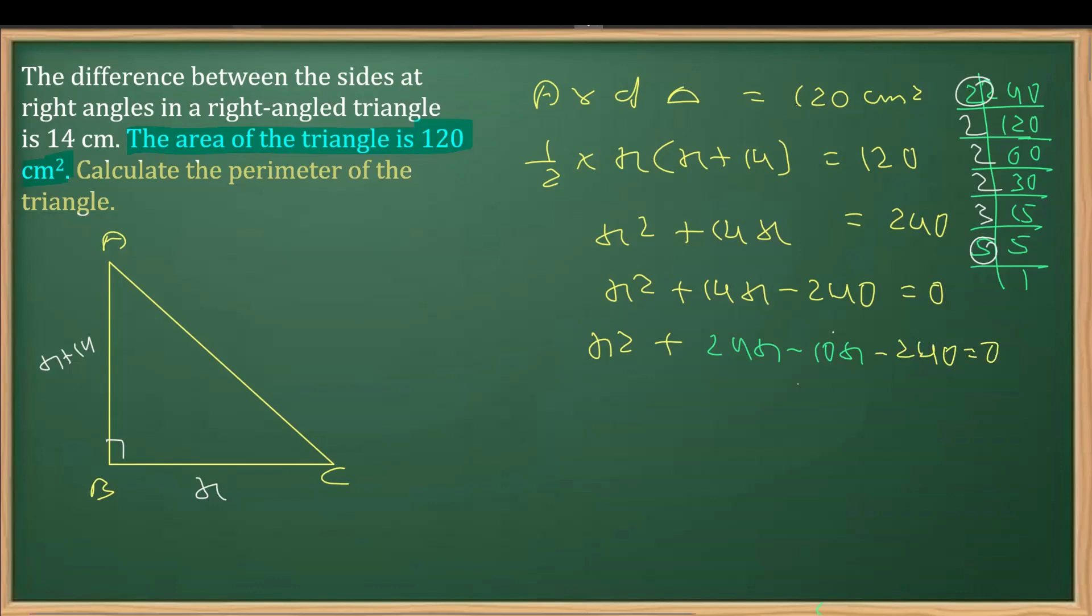So what I did actually, I factorize this 14x. Now we can see that we have x common from the first two terms, so it is x plus 24. On taking minus 10 common, we are getting again x plus 24. As we have taken minus common, that results to give you these two as the factor. Now equating this with 0, we are getting x as minus 24, and equating this with 0, the other factor, we are getting x as 10.